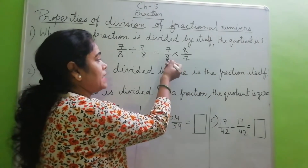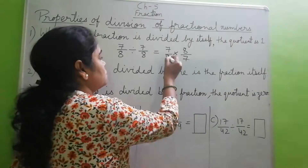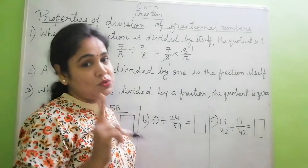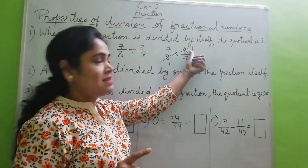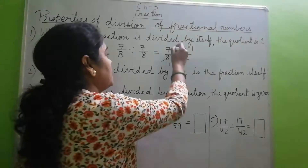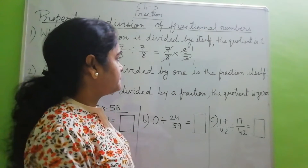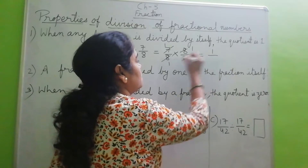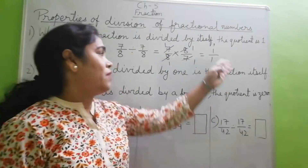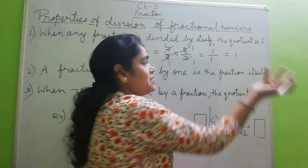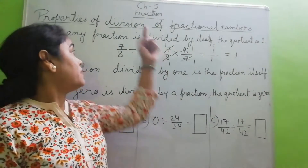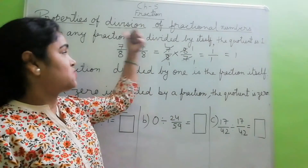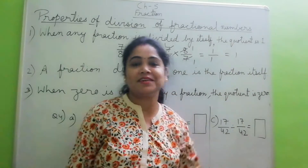Now, you can divide any denominator by any one numerator. We cancel 8 with 8, and 7 with 7. The result is 1 into 1 over 1 into 1, which is 1 by 1 = 1. So finally we get 1, and this rule is proved: when any number or any fraction is divided by itself, the quotient is 1.